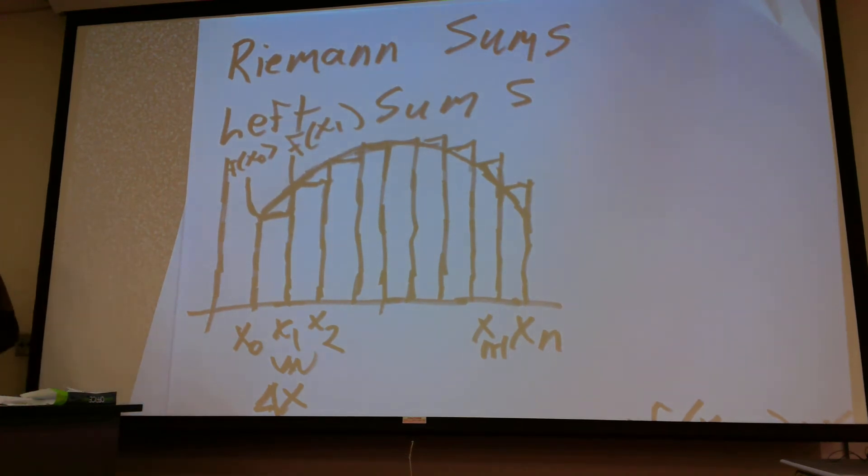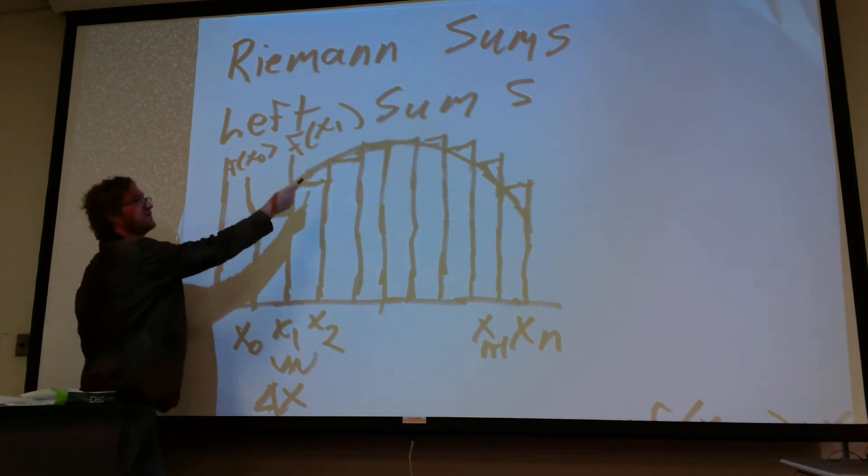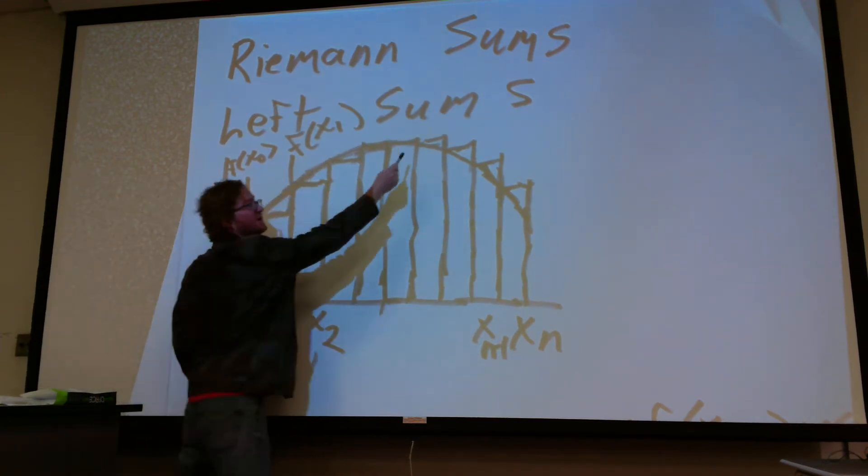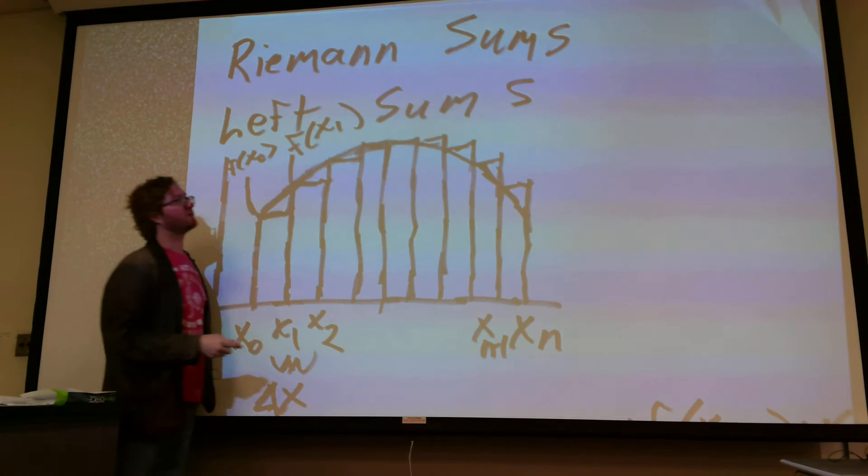Now, left sums are missing some area right here, missing some area right here, and then it's including too much area on those intervals over there.